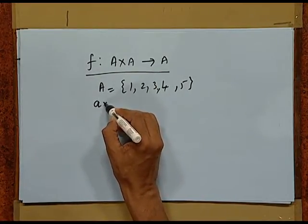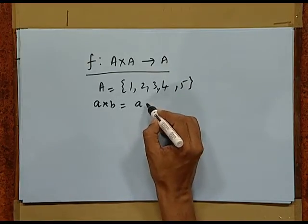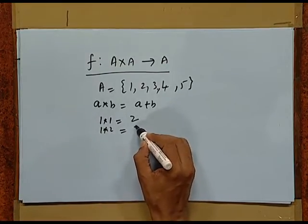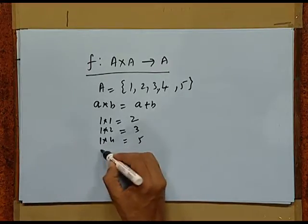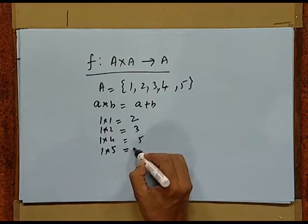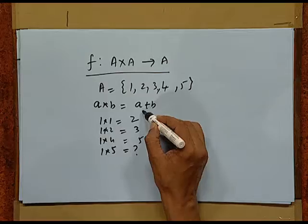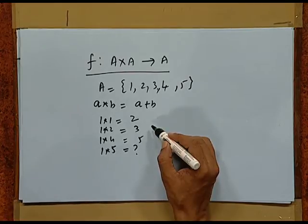We define operation star by A star B is A plus B. Then we have 1 star 1 is 2, 1 star 2 is 3, 1 star 4 is 5, but 1 star 5 — we have no element in the set A. So this is not an example of binary operation because this rule does not make it a function. In short, always the output of the binary operation must be in the set.